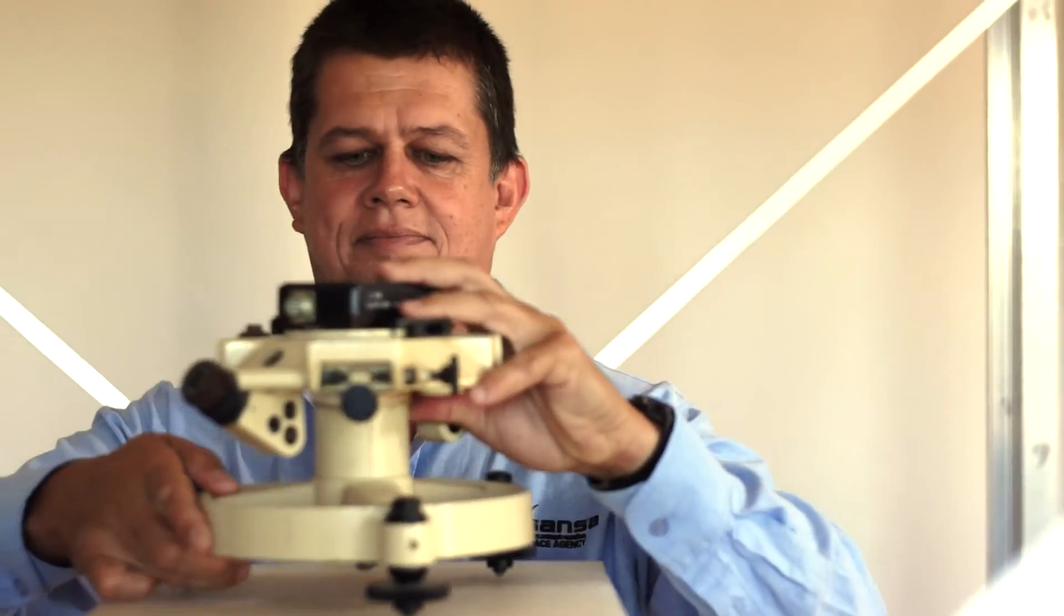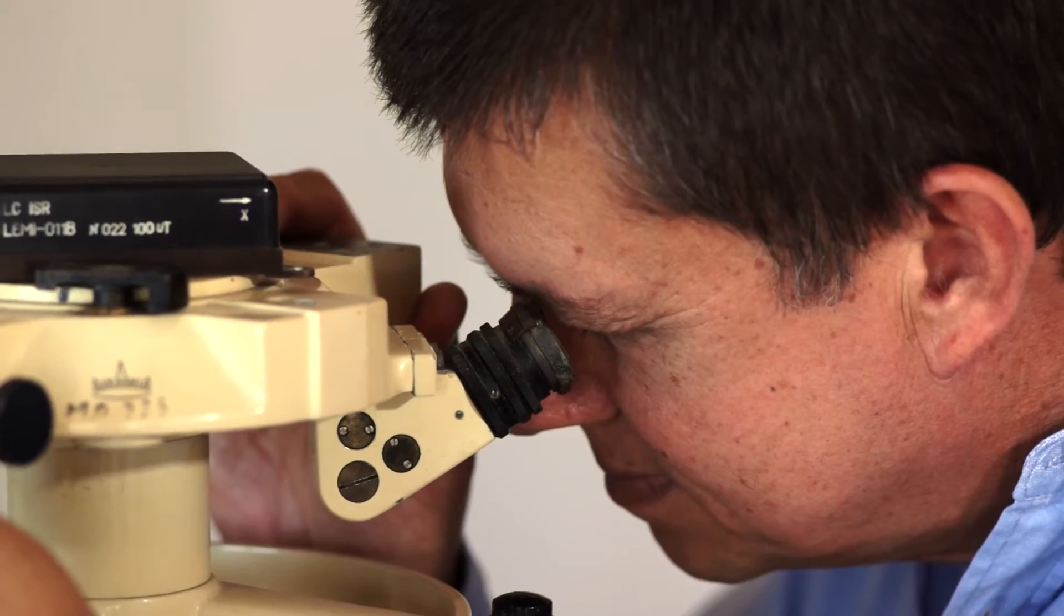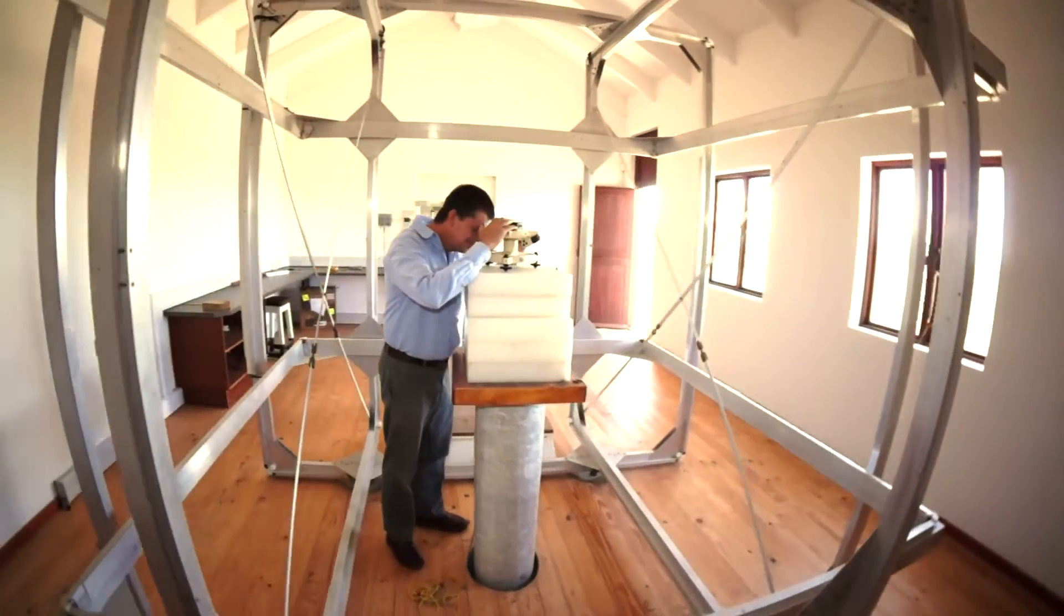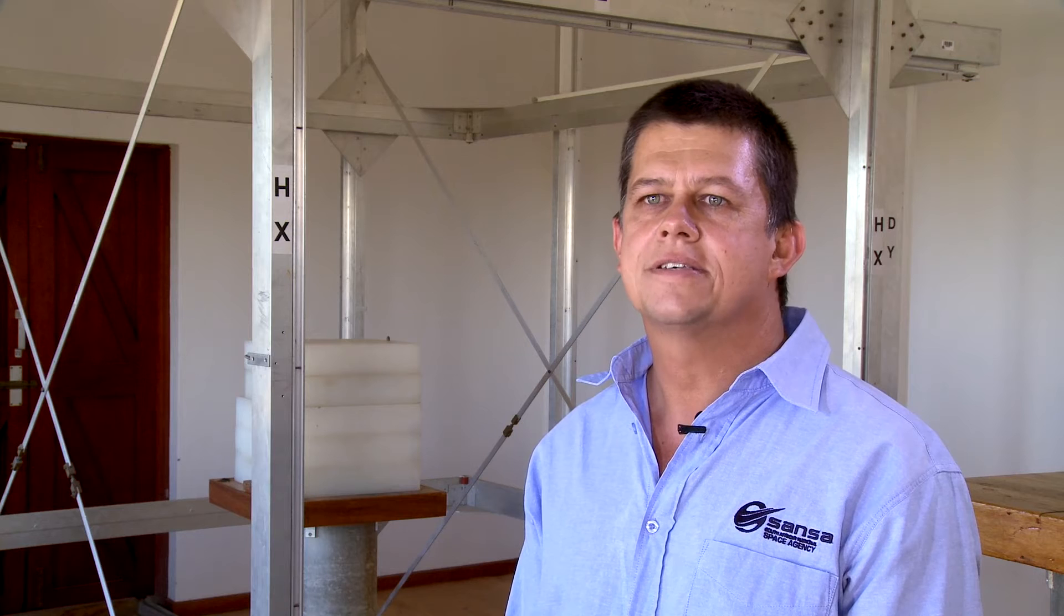The system behind me is a 3-axis Helmholtz coil system and the system is used for the cancellation of the Earth's field and then also to generate any magnetic field that are available in space and on Earth. This is the only large operational coil system in southern Africa and it's used on a regular basis for the calibration of magnetic systems as well as systems containing magnetometers.